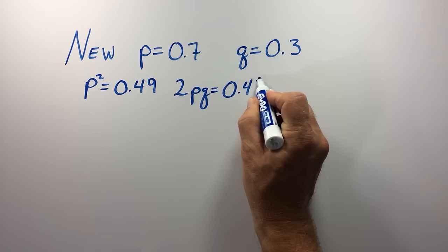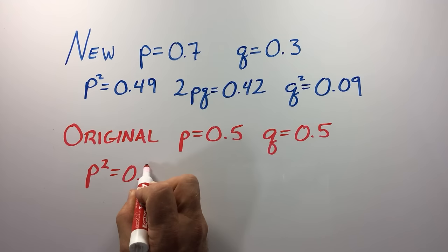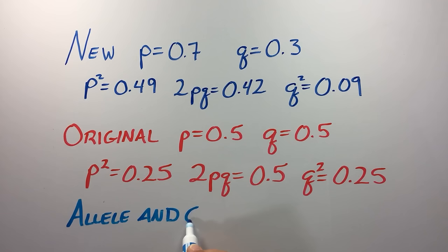Comparison of these values to those from our original population shows how violation of one of the assumptions of the Hardy-Weinberg model can lead to a change in the allele and the genotype frequencies.